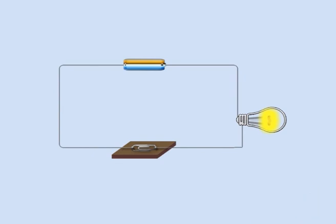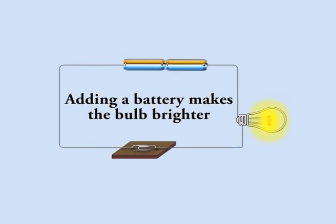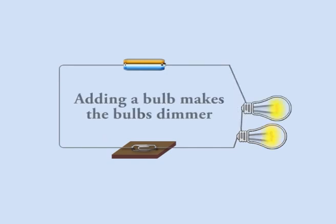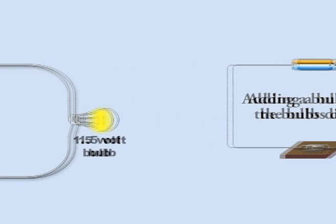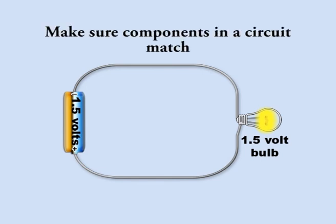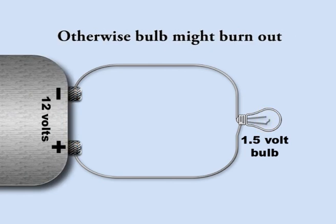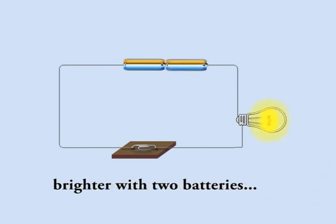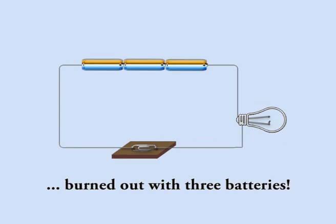What happens when you add an extra battery to this circuit? Remember to take care to match components in a circuit, so that the voltage of the battery matches the voltage of the bulb. Otherwise, the bulb might burn out. And don't assume the bulb will keep getting brighter if you keep adding more batteries. If you add too many batteries, the bulb can also burn out.